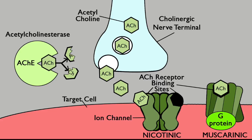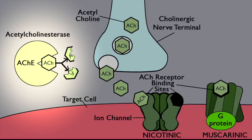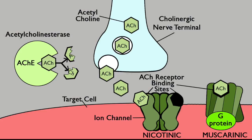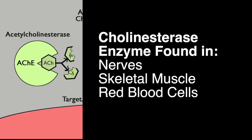Acetylcholine is broken down by an enzyme that metabolizes it into acetate and choline, which definitely deactivates acetylcholine — it breaks it into two pieces. This enzyme is classically abbreviated AChE, which stands for acetylcholinesterase. Just like monoamine oxidase, the -ase ending means it's an enzyme. Acetylcholinesterase is present in nerves, in skeletal muscle — because acetylcholine causes skeletal muscle to contract — and also in red blood cells.